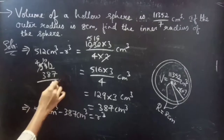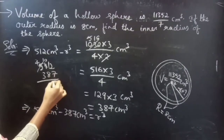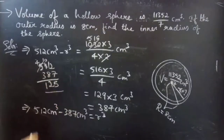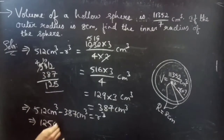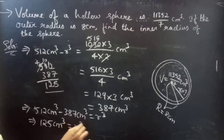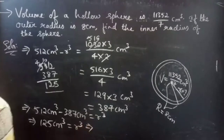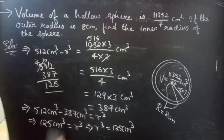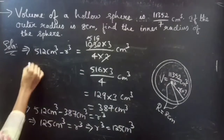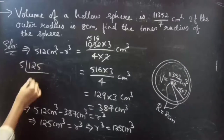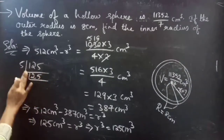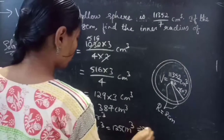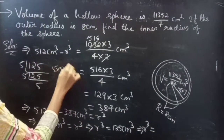So 512 minus 387 equals r³. Computing: 512 minus 387 gives 125. Therefore r³ equals 125 centimeter cube. Finding the factors of 125: 5 times 5 times 5, so r³ equals 5 cubed.